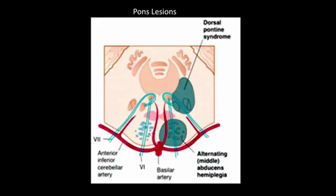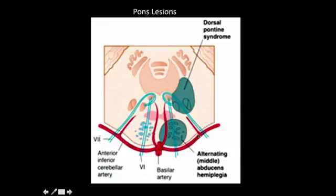If there is a lateral area lesion from the anterior inferior cerebellar artery, you will have seventh and eighth nerve involvement plus spinothalamic and spinal trigeminal tract involvement. The patient won't be able to hear, will have balance problems, and will have facial paralysis. This lesion can also cause Horner syndrome because sympathetic pathways are traversing down through this area.